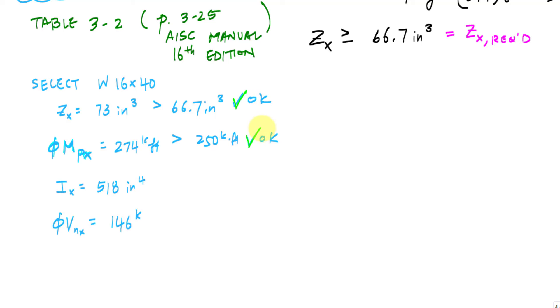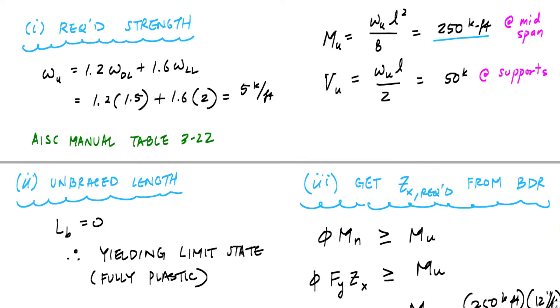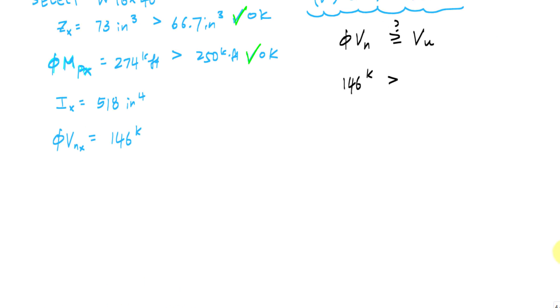That just means looking at the BDR for shear: phi Vn greater than or equal to Vu. And in this case, I have 146 kips, which is much greater than this required shear strength of 50 kips. So this is check.